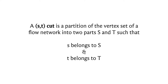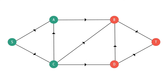Formally, a cut is a partition of the vertex set of a flow network into two parts, typically denoted capital S and capital T — these correspond to vertex subsets. The only constraint this partition must satisfy is that the source vertex belongs to one part and the target vertex belongs to the other. You can distribute the remaining vertices however you like and it will still be a valid ST cut. Here is a flow network example where all the green vertices form set S and all the red vertices form set T, making a valid ST cut.